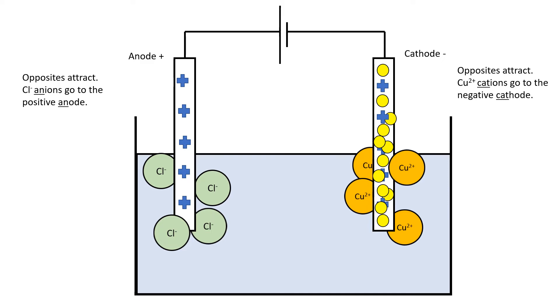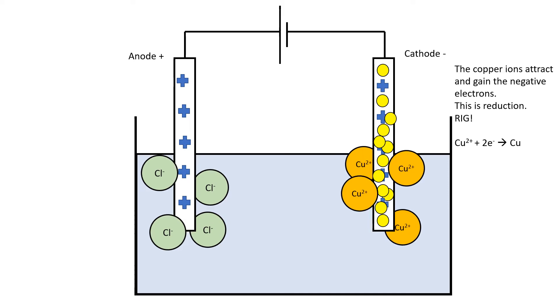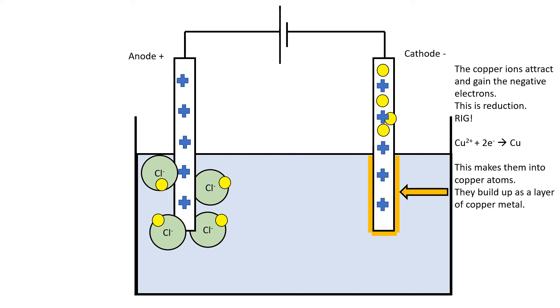Let's continue that theme - opposites attract. That means the copper ions are going to attract those negative electrons once they get there. This is what we call reduction. Reduction is gain - seems stupid - reduction is gain of electrons. We can see copper two plus in the little formula there, the half equation: copper two plus plus two electrons becomes totally normal copper. Now that copper just builds up and it builds up in a layer on the electrode and you can see it building up.